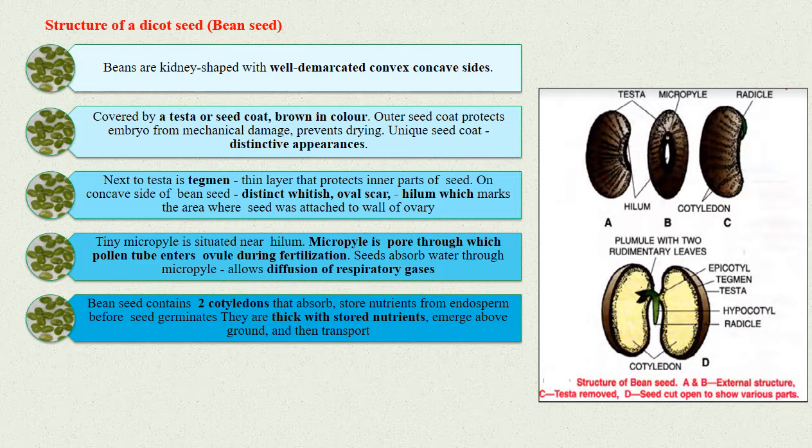Bean seed contains two cotyledons. They absorb and store the nutrients from the endosperm before the seed germinates. The cotyledons, thick with stored nutrients, emerge above the ground during germination and then transport the stored nutrients to the developing seedling.